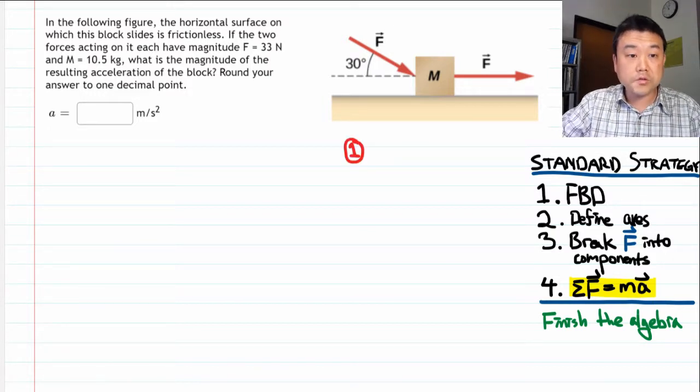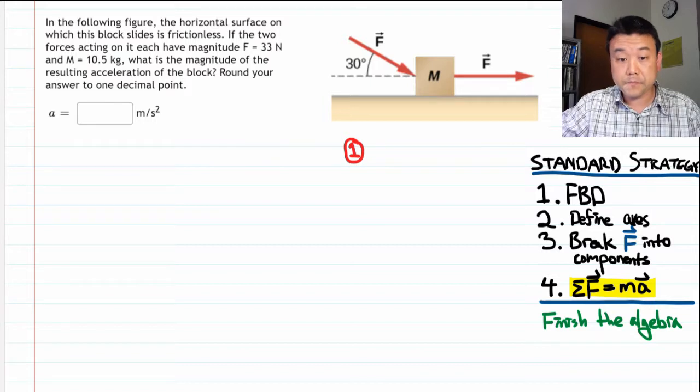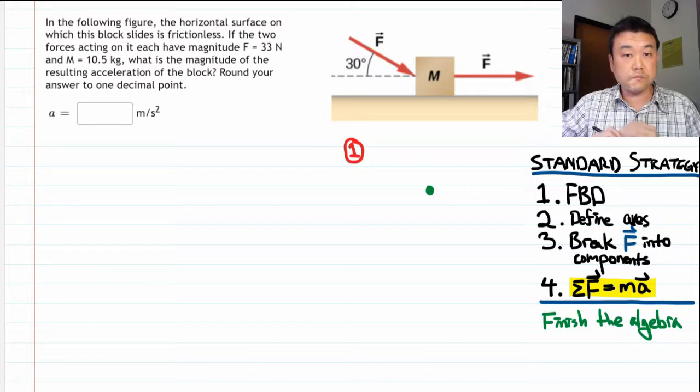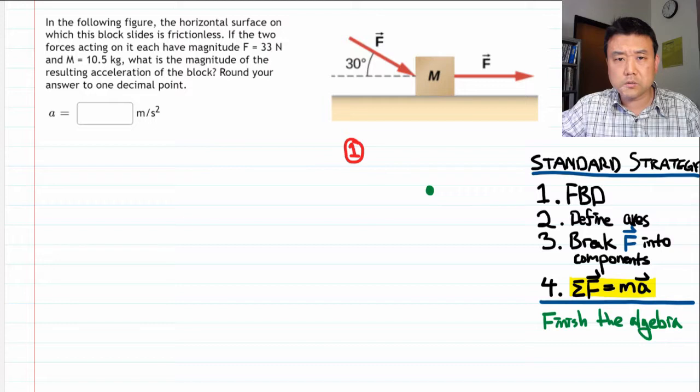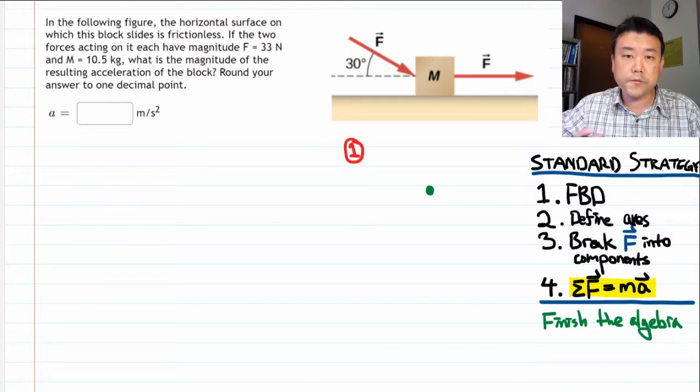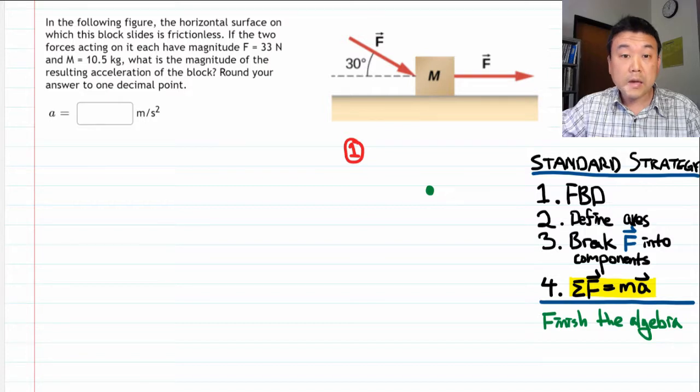The first step is to draw a free body diagram. And the purpose of the free body diagram is to lay out all the information that's given so that we can be sure we didn't forget anything. And leave us with a graphic which shows all the information given in the problem in one glance. This is the most important step.